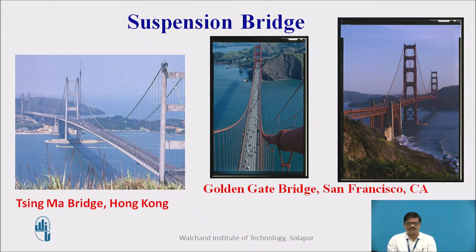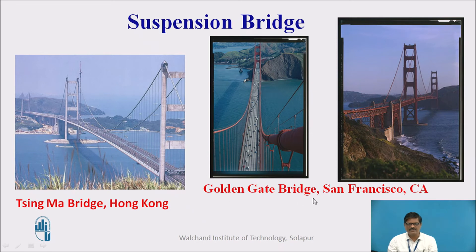These photographs show examples of suspension bridges. The first is the Tsing Ma Bridge in Hong Kong, where you can see the suspenders, the main cable, and the towers. The second and third photographs are of the Golden Gate Bridge, the famous bridge in San Francisco, California.